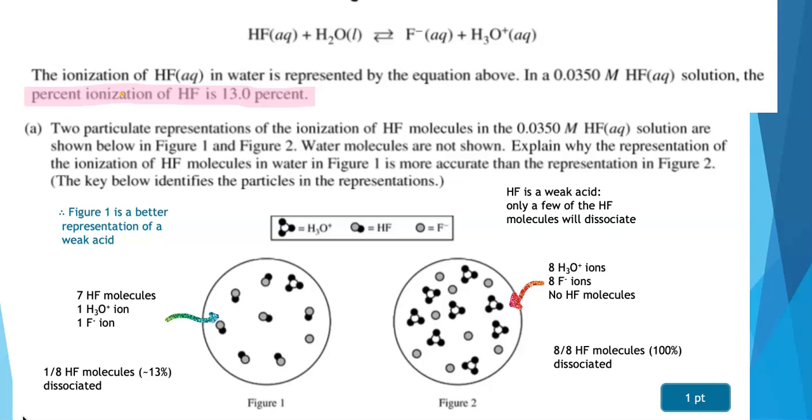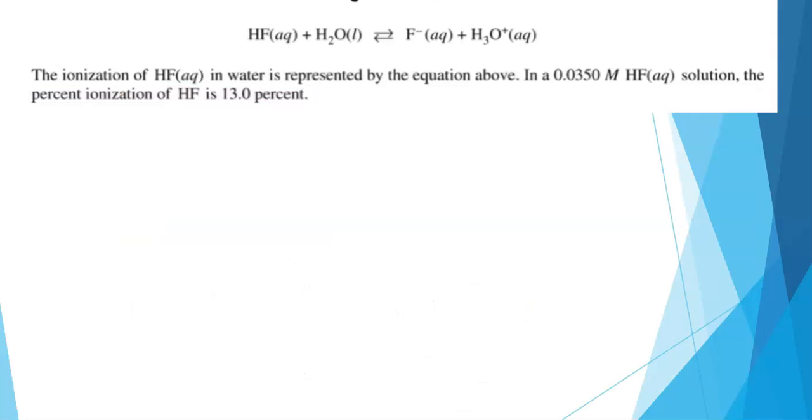Now in order to earn the point here, you either needed to describe what was right about figure 1 or what was wrong with figure 2. You didn't have to do both. I went a little overboard, right? I did a little extra. It's okay. But do remember, you want to keep your answers brief. So don't go into lots of detail when you don't need to. So that was just part A. Let's go look at part B.